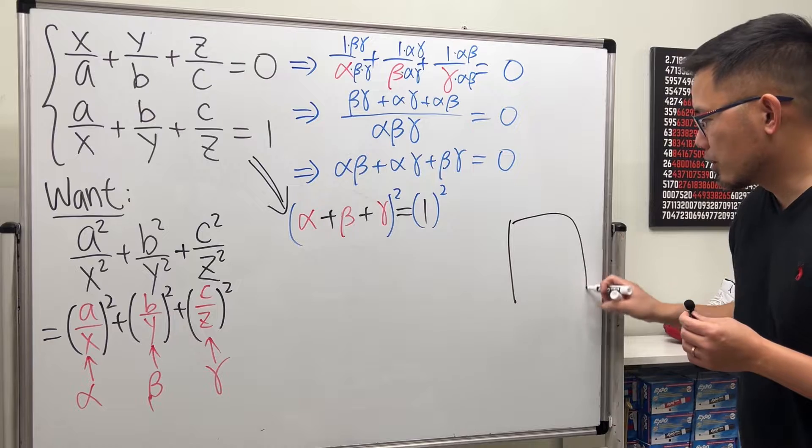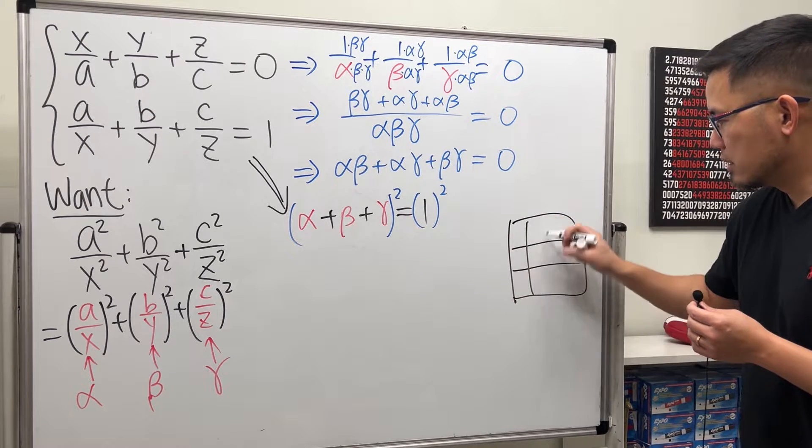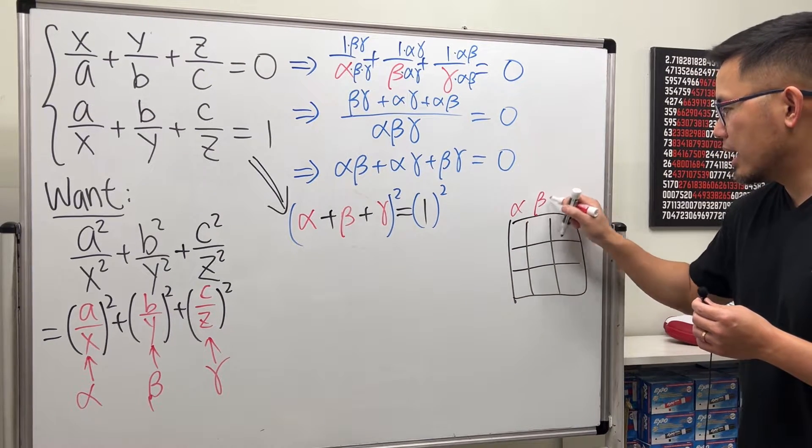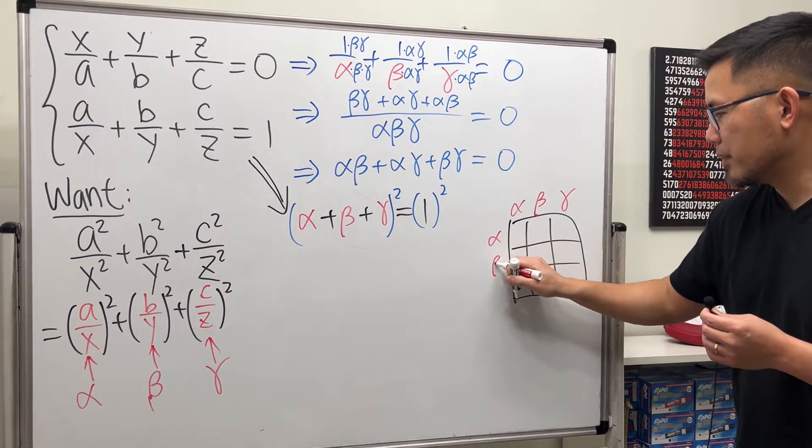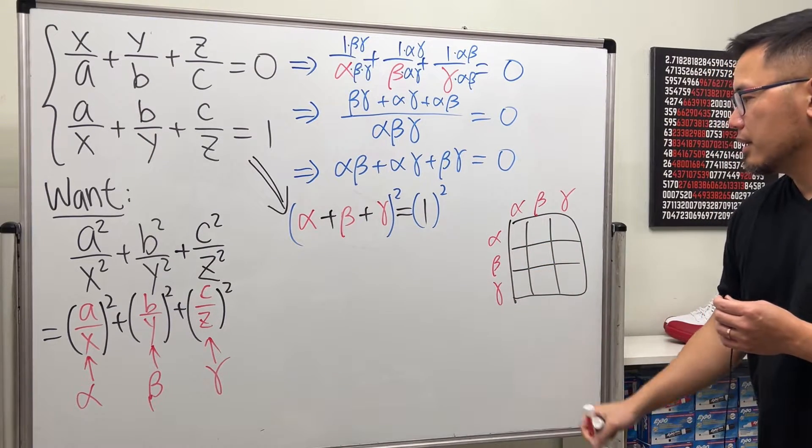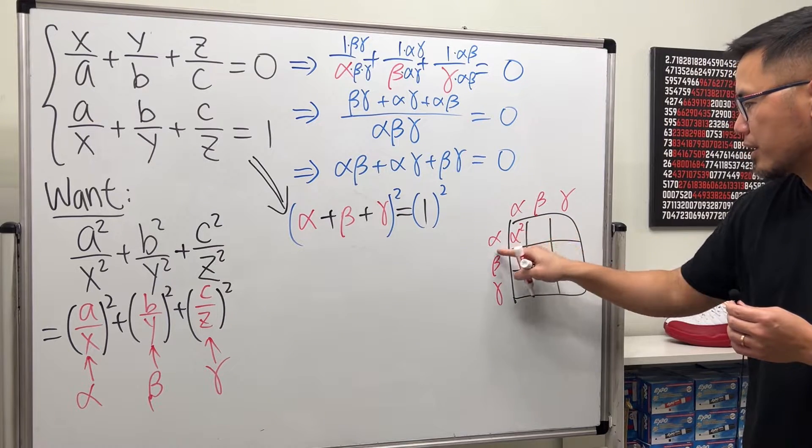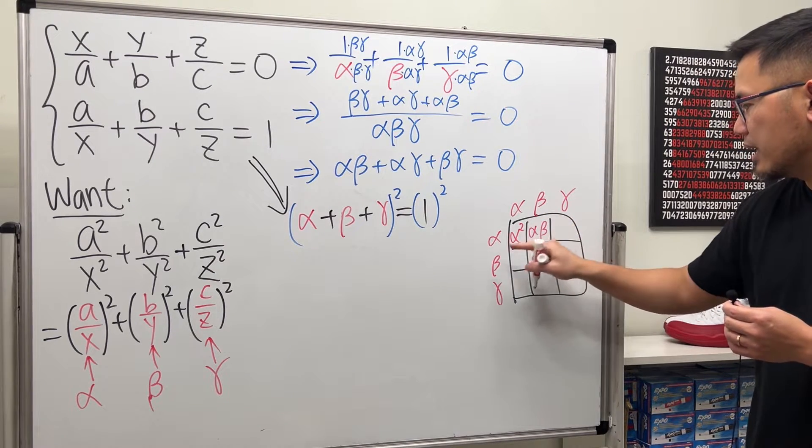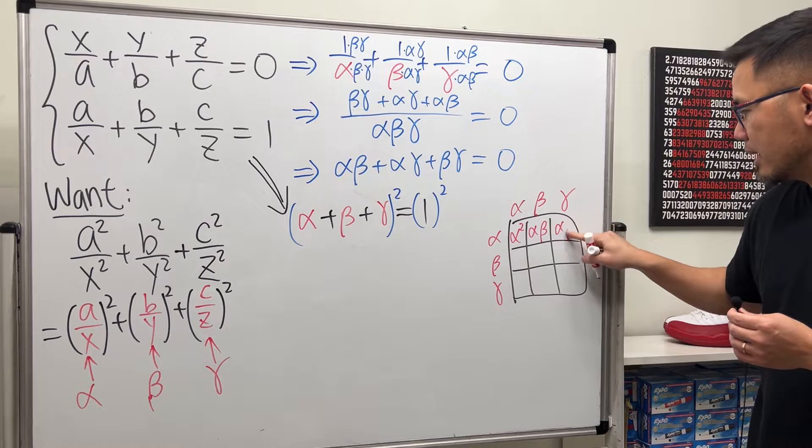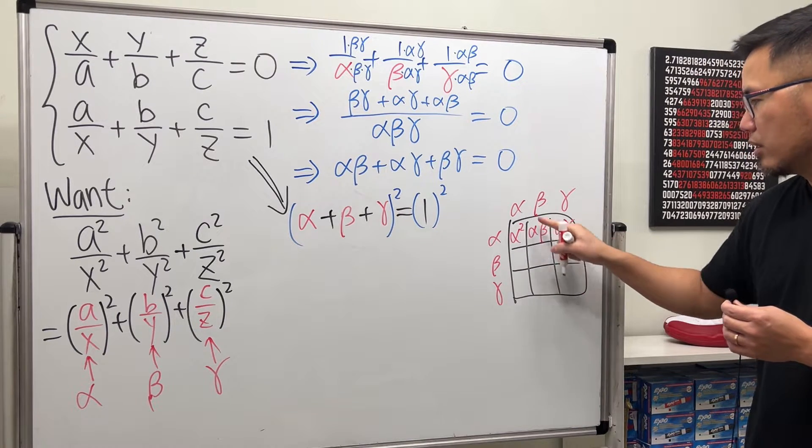So in case if you haven't seen the formula for this, I will just show you how we multiply this out. You can do it with the tic-tac-toe box like this. And then you just put alpha, beta, gamma, and then alpha, beta, and gamma. So for this box, it's just alpha times alpha. So alpha squared. And this right here is alpha beta, and then alpha gamma.